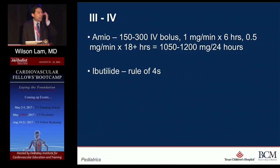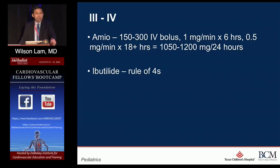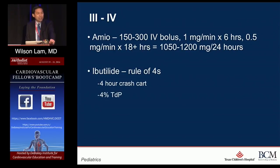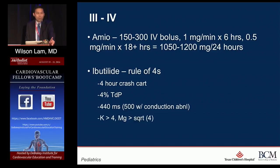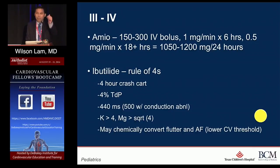The IV form of amiodarone uses 150 or 300 mg IV boluses followed by a drip protocol delivering 1–1.2 grams over 24 hours. Ibutilide is the IV corollary to dofetilide. My rule of fours: keep the crash cart on for four hours because of 4% risk of torsades; keep QT less than 440 (up to 500 with conduction abnormality); potassium greater than 4; magnesium greater than the square root of 4. It may chemically convert flutter and AFib or lower your cardioversion threshold. Amiodarone is your green go-to agent; ibutilide is more of a yellow — some practitioners favor it, others rarely use it.